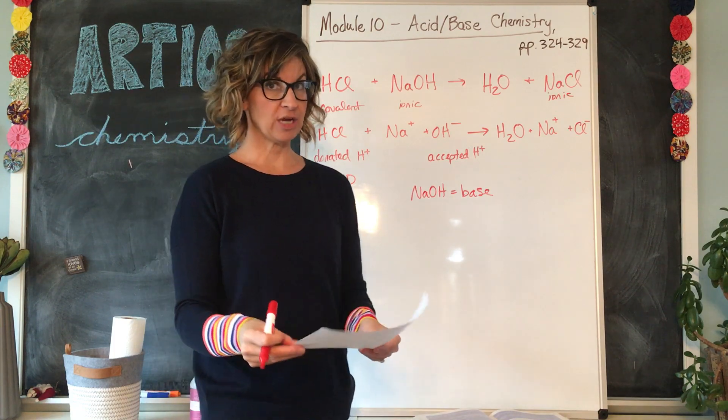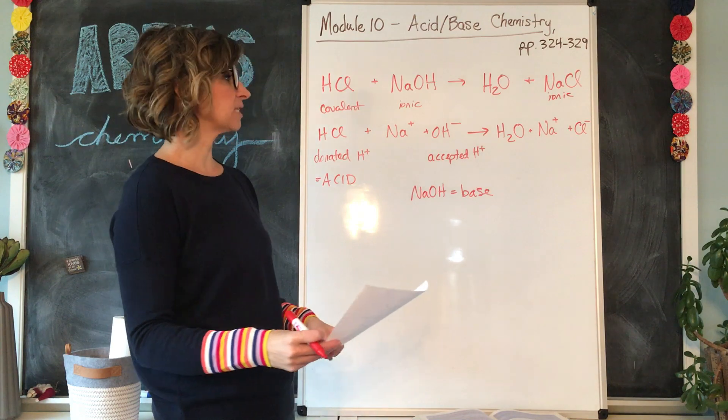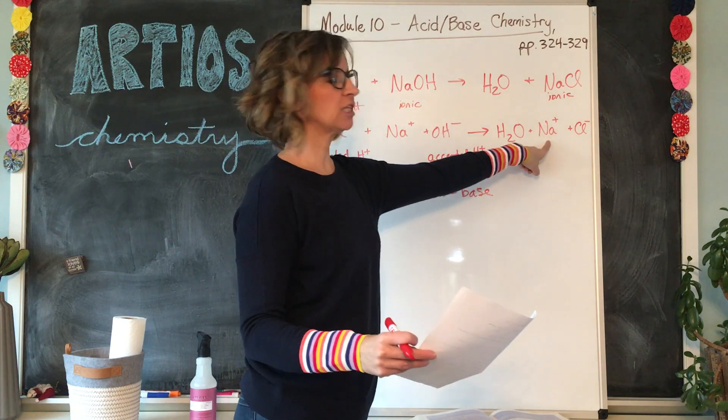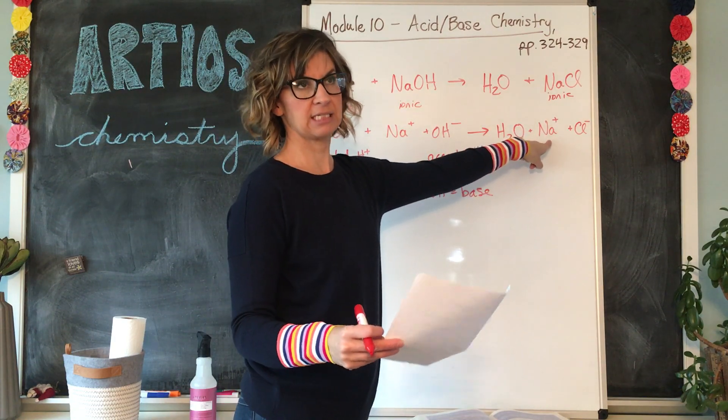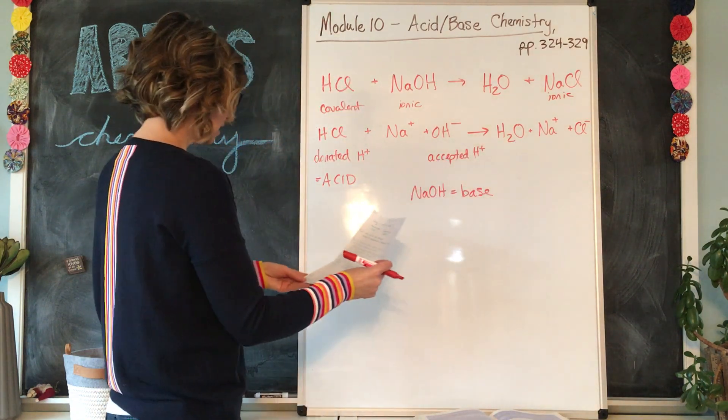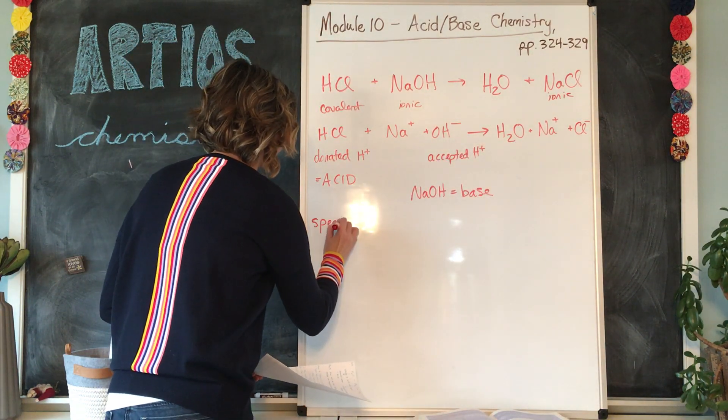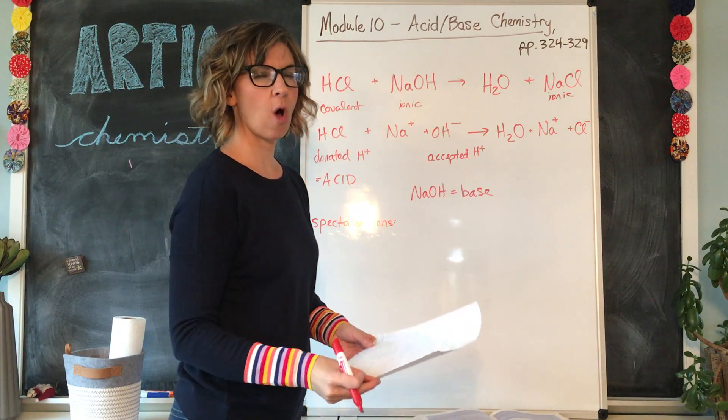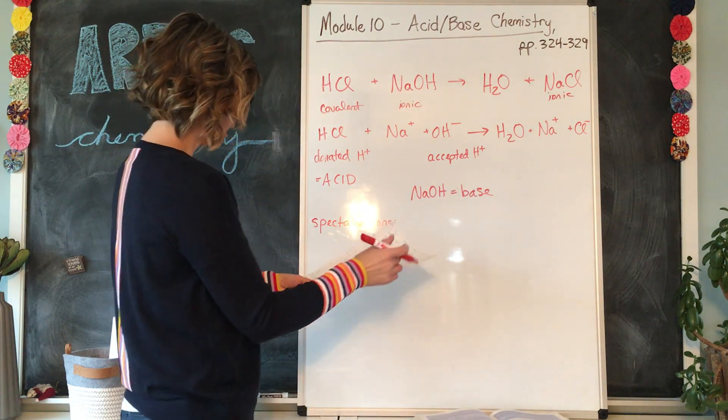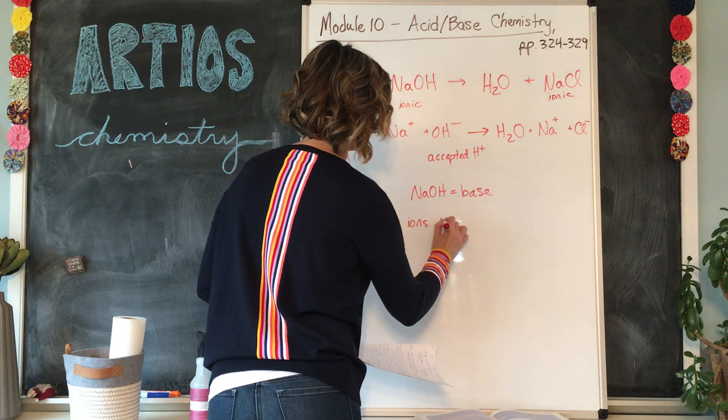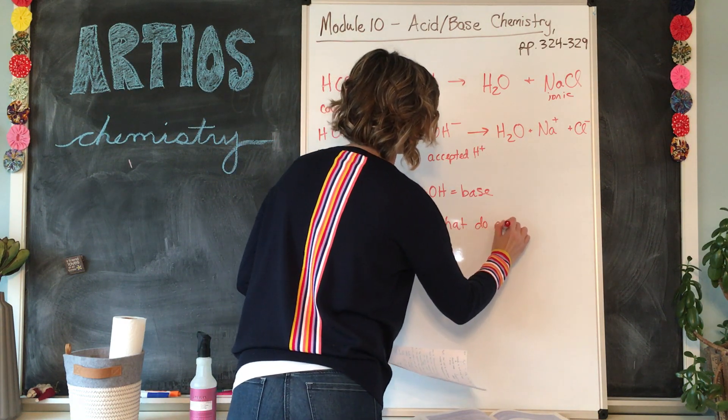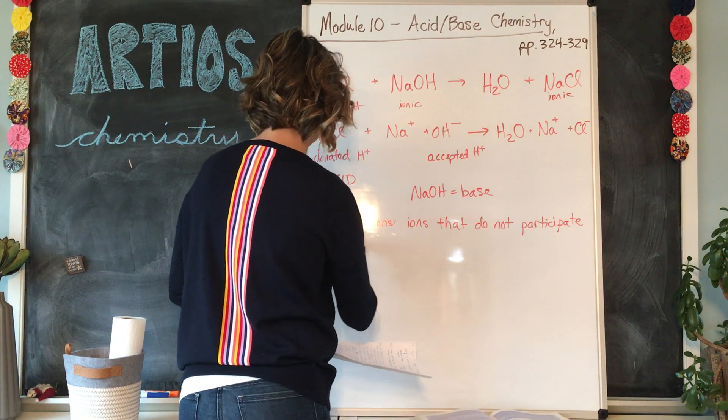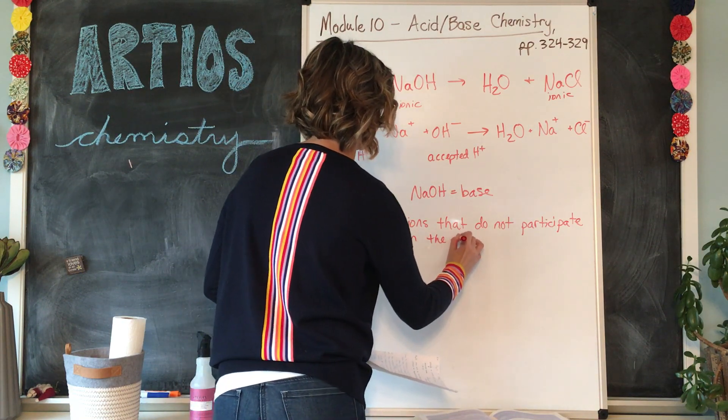Now, sometimes in an equation, you're going to have ions that don't seem to do anything at all. Like for example, in this reaction, the Na+ at the end of the reaction, there's still just Na+ floating around in this beaker of solution. We call these ions spectator ions. And you can see why. Spectator ions are ions that do not participate in the reaction.